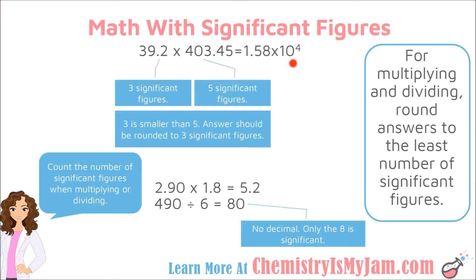The easiest way to express three significant figures here was to use scientific notation. Down at the bottom, 2.90 has three significant figures and 1.8 has two, so my answer is rounded to two significant figures. It also works for division: 490 has two significant figures, and 6 has one significant figure, so I have written the answer with only one significant figure. Note that there is no decimal, so that trailing zero is not significant — there is only one significant digit in this answer. I could also write that in scientific notation as 8 times 10 to the 1, which makes it more obvious that there is only one significant figure, but it still represents an answer of 80.